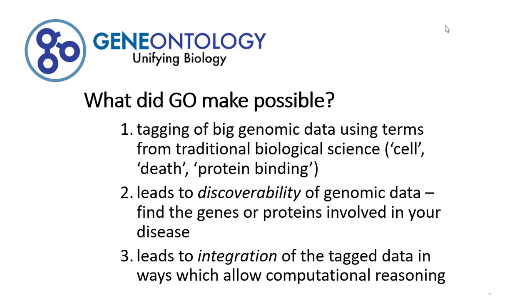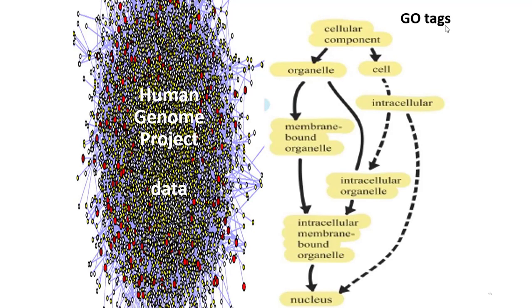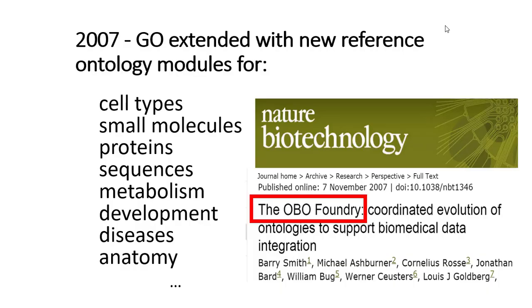It allowed tagging of genomic data in terms of biology terms — not polysaccharide, but terms like death, perception, or mating behavior. These are the terms on the right, and the data is on the left. The data came not just from humans, but from mouse, fly, fish, and so forth. And now there are thousands of genomes which are tagged using the same dictionary. But the gene ontology didn't cover all of biology — it covered biological processes, but not anatomy, cell types, proteins, or disease.